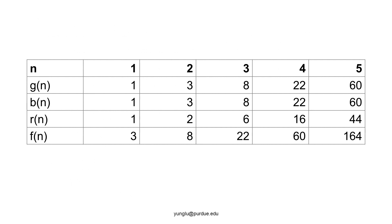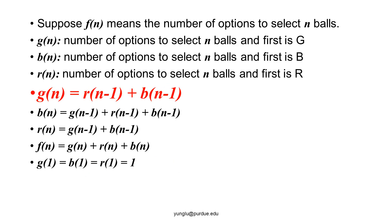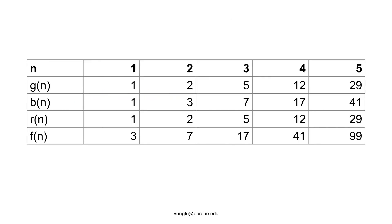Let's add another restriction and discuss how we should modify the solution. The restriction is that two adjacent balls must not be both red nor both green. How should we modify the solution? We can use the same approach by defining G(N), B(N), and R(N). The only difference is that if the first ball is green, the second ball must be blue or red. Thus G(N) is the sum of B(N−1) and R(N−1). Note that G(N−1) is not used because it would make the first two balls both green. This table shows the number of ways to select balls for different values of N.